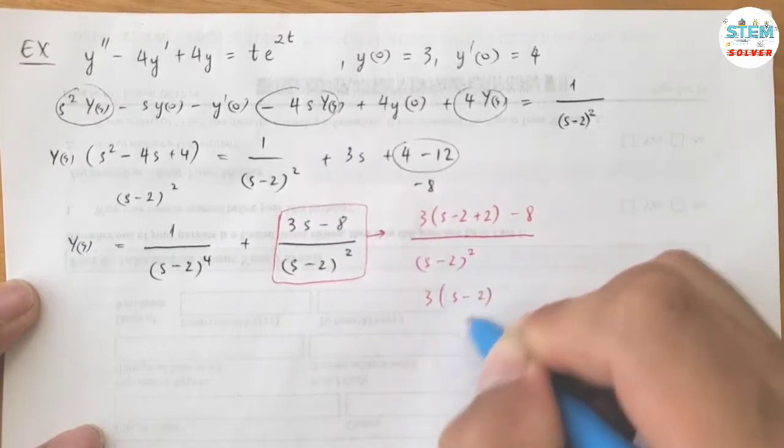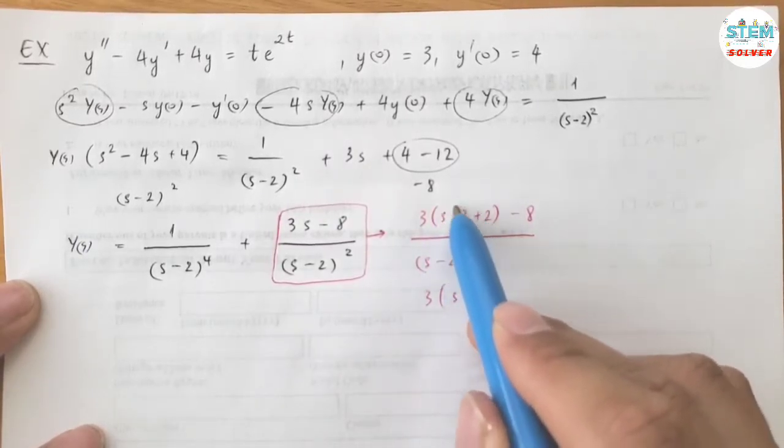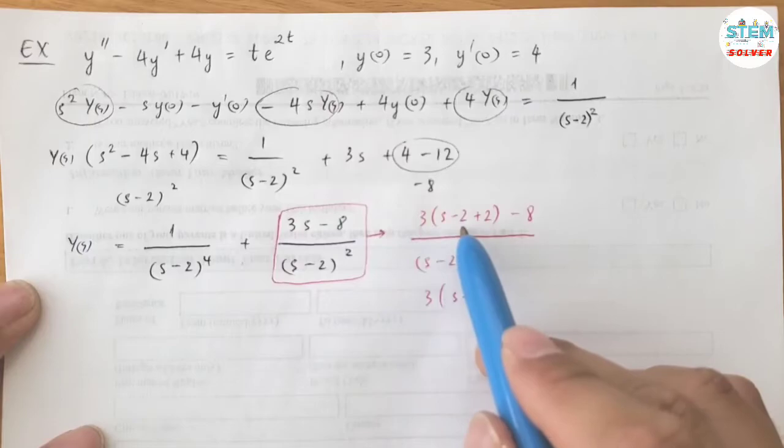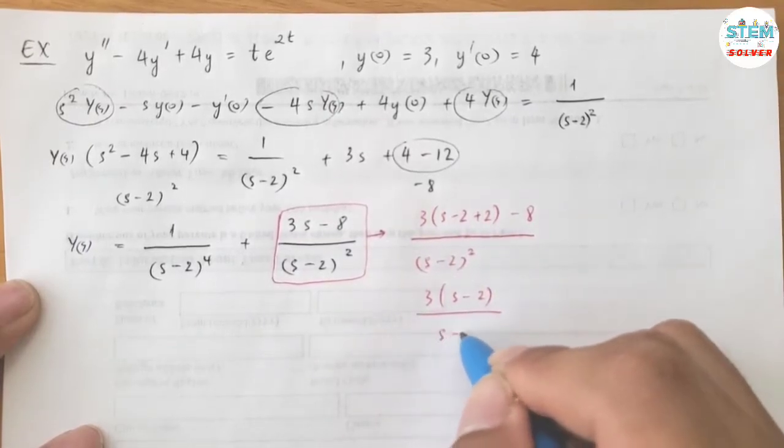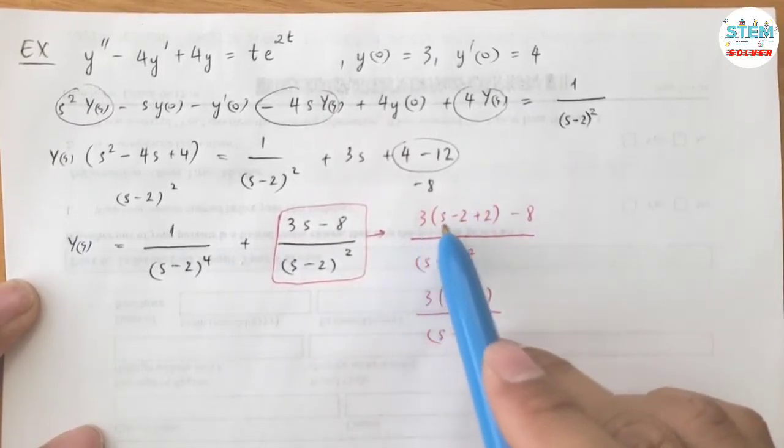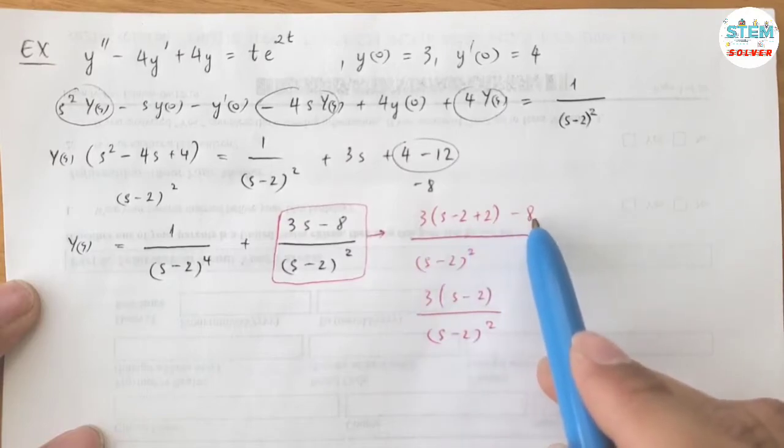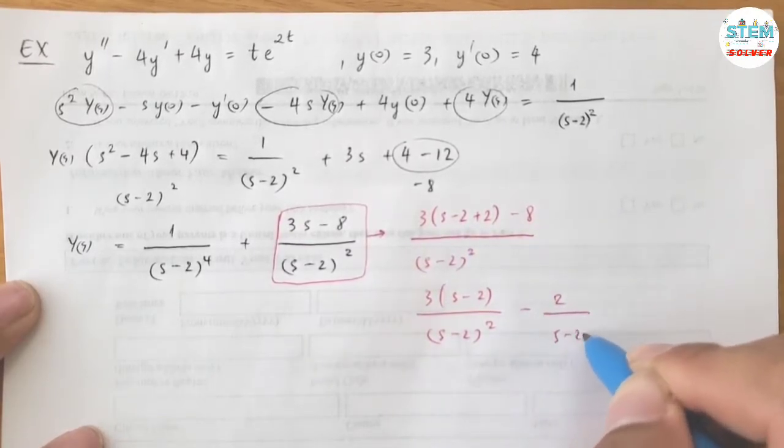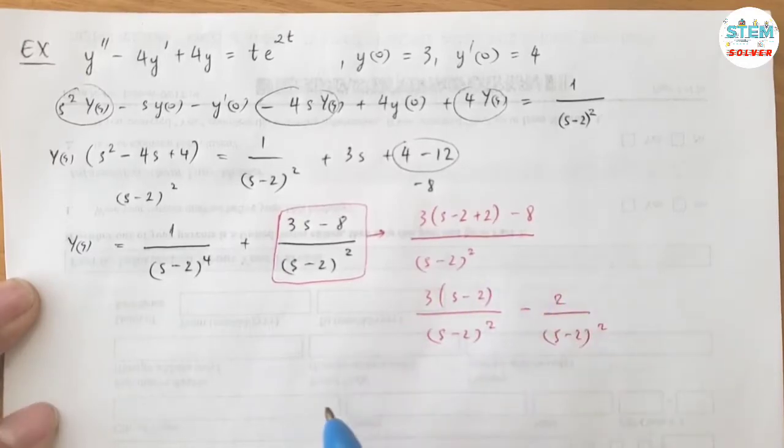So I have 3S minus 2, right, distribute this as a group. So you have 3 times S minus 2 over S minus 2 squared. And 3 times 2 is 6, 6 minus 8 is negative 2, negative 2 over S minus 2 squared.